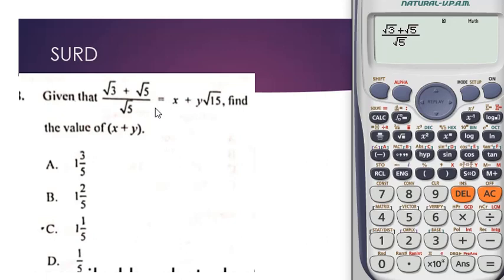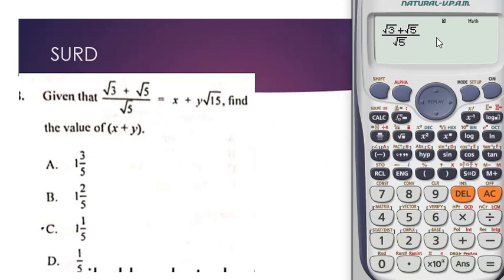If you had to solve this manually you'd have to find the conjugates. We have five in the numerator and five in the denominator and then you start multiplying — that will waste your time. So once you know this you are good to go. Let's see how we solve this.